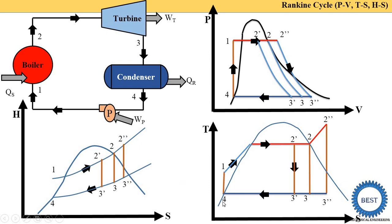The pump process is isentropic on the TS diagram, and taking projections of points one and four confirms this. On the HS diagram, we draw a vertical line — the projection on the x-axis gives one point: S1 = S4. Enthalpy slightly increases because H = Cp × ΔT, and temperature increases in the pump.